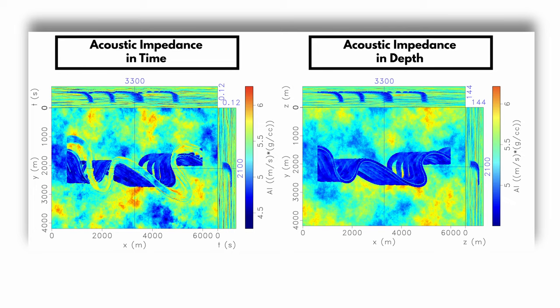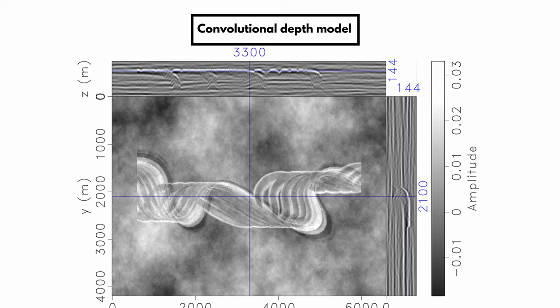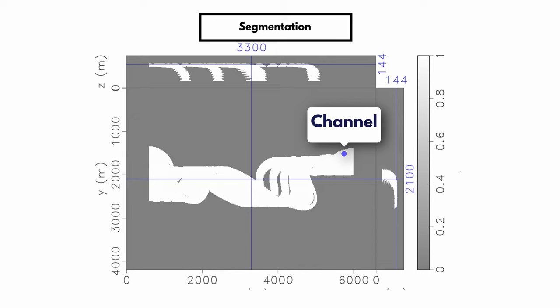Because channel identification is a segmentation problem, they built a dataset with labels where 1 represents channels and 0 represents everything else. The elementary volume generated in 3D is of size 156 by 156 by 100. For training, they selected 1000 examples, and for validation only 6.